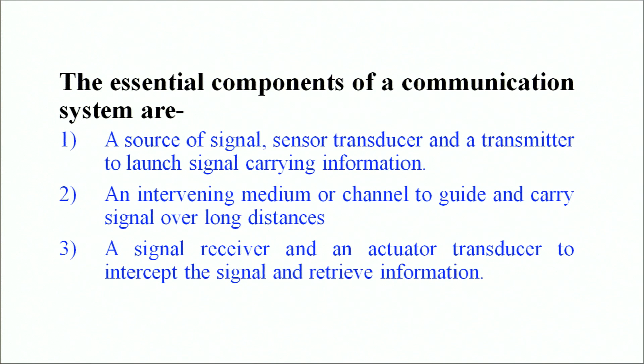The essential components of a communication system, one after the other. To begin with, a source of signal and a sensor transducer. A sensor transducer is basically a device which converts one form of energy to another form of energy. So, with the help of the sensor transducer, the energy from the source of signal is converted from one form to the other.